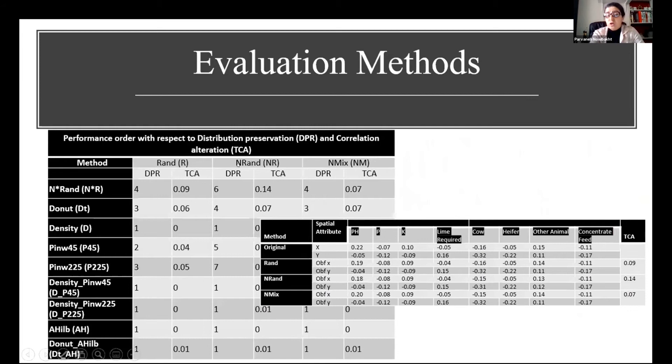Another metric is total correlation alteration, which is the total absolute correlation alteration of location-related attributes between original and obfuscated points. As we can see, density again has the best and N-Rand has the worst performance.